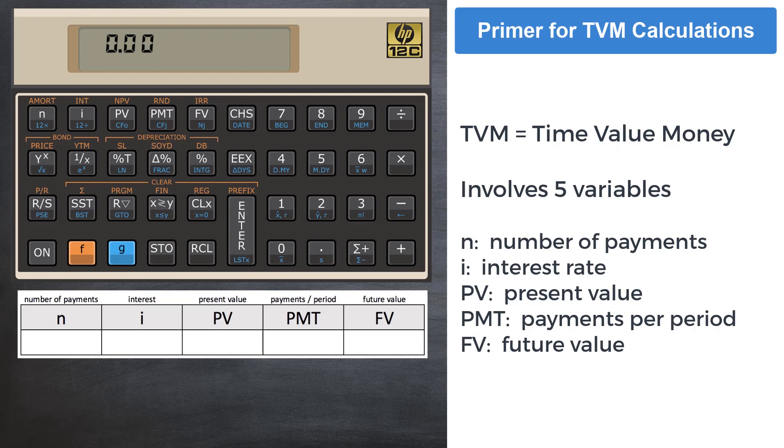A TVM calculation involves some or all of these five variables: number of payments, interest, present value, payments per period, and future value.